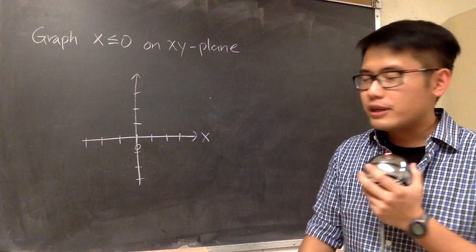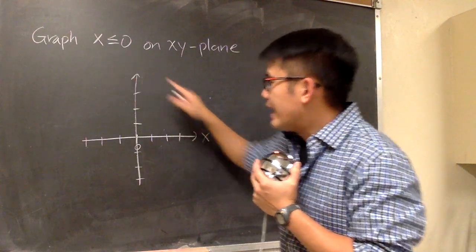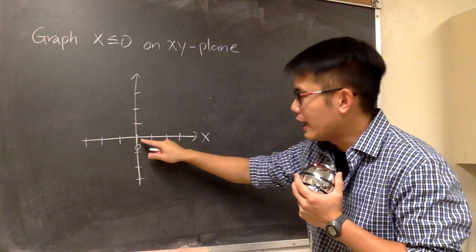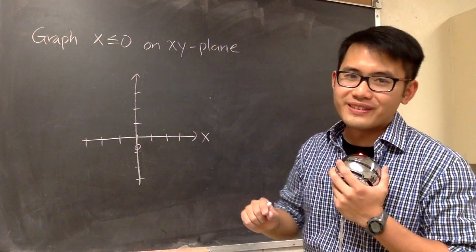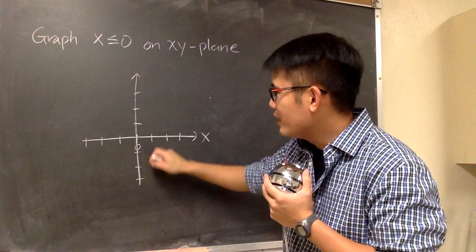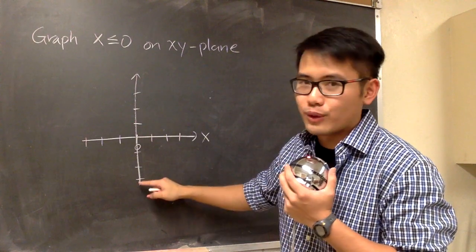And the way that I can remember is that on the x-axis, the little lines right here are vertical. So we go to 0, and we go ahead and draw that vertical line.